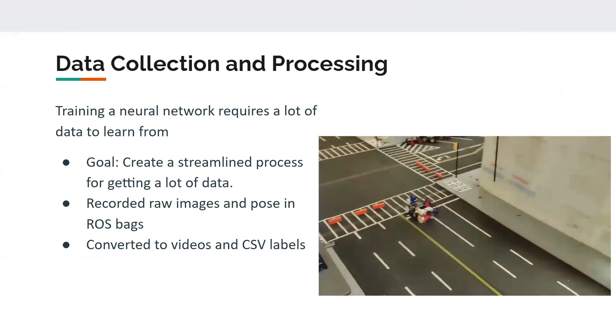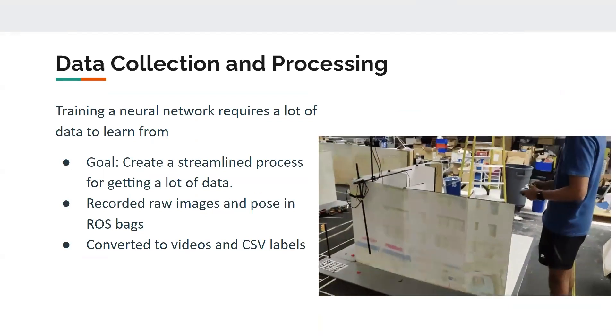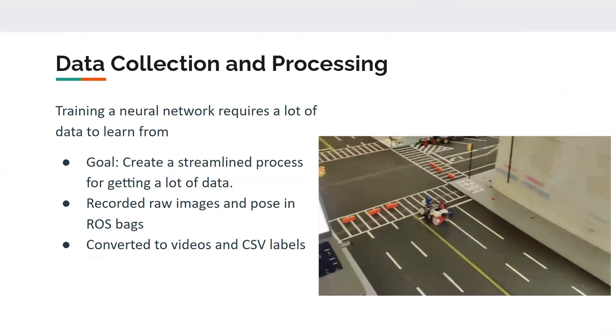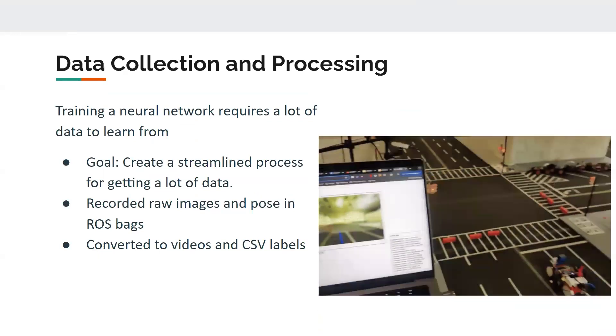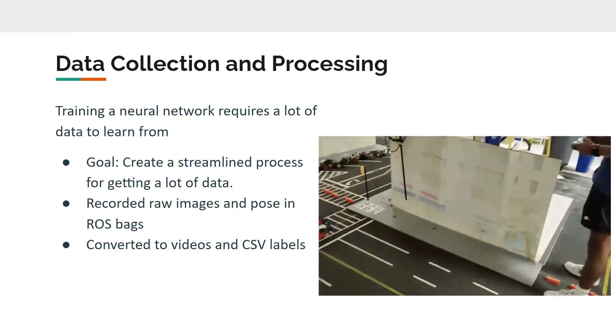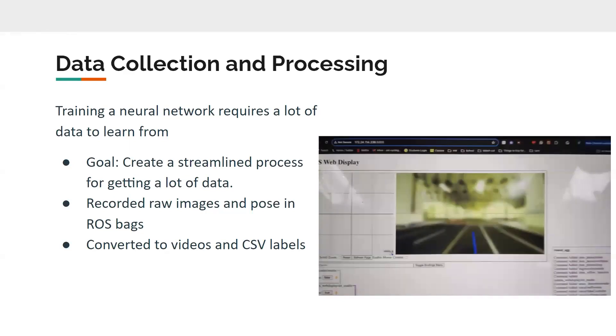Data collection and processing. For our neural network, we need a lot of data for it to be able to drive on its own. So essentially what we do is we use a wireless controller and drive the car around the smart city in the back. And essentially our goal is to create a streamlined process to get that data.